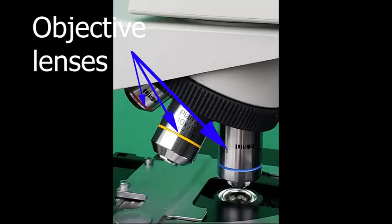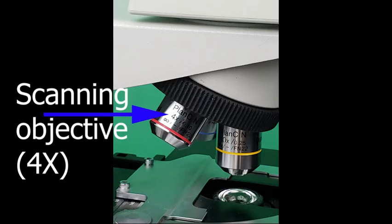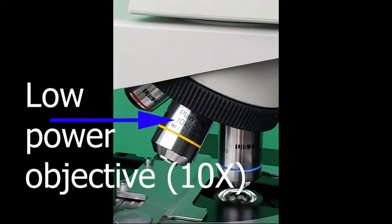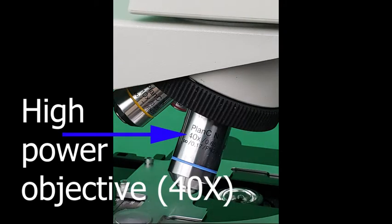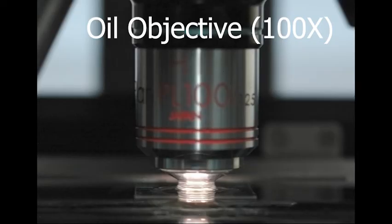Objective lenses: Three to four objective lenses are usually attached to the nosepiece with different magnification written on each lens. The shortest of these lenses is the scanning objective or 4x for quickly surveying the whole area of the microscope field. The mid-sized one is the low power objective or 10x. The longest one is the high power objective or 40x. Some microscopes may have an oil objective which requires oil to observe the specimen. The oil objective is usually 100x.